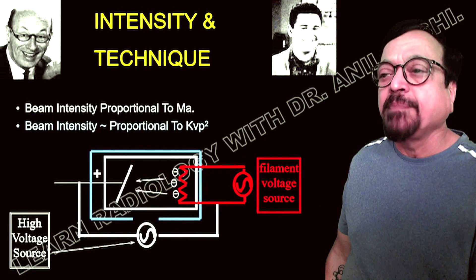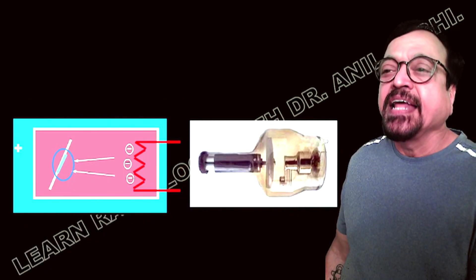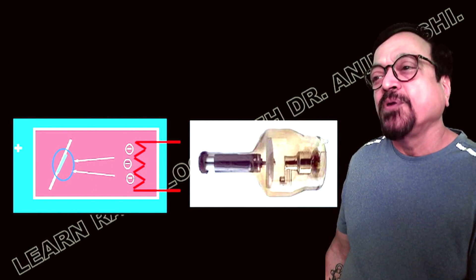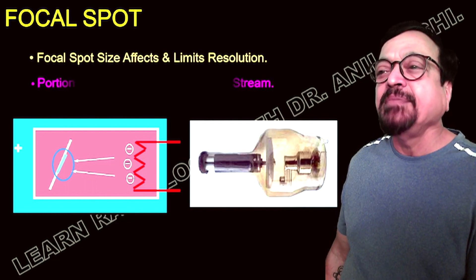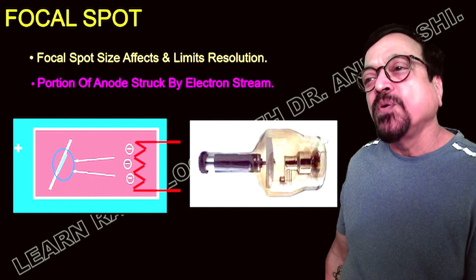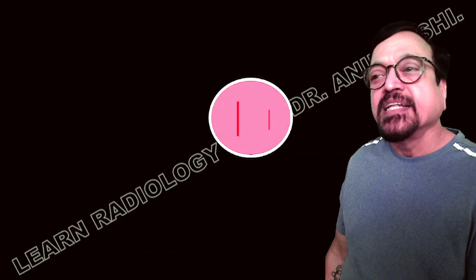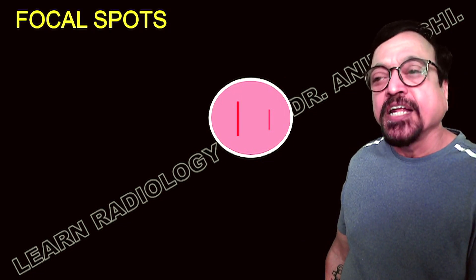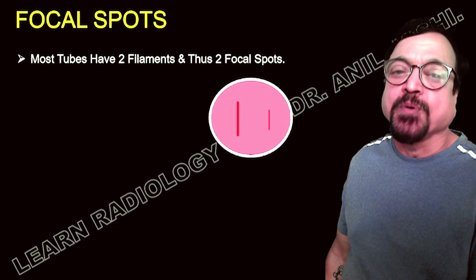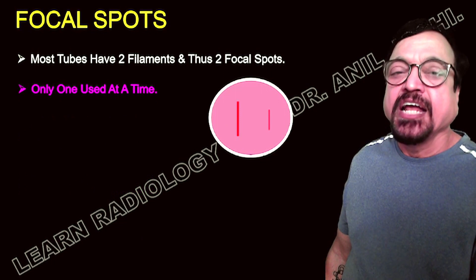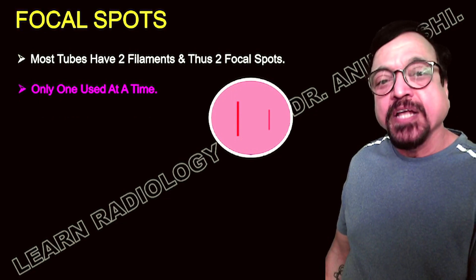Beam intensity depends on kV, mA, target material, and filtration. Beam intensity is proportional to mA, and proportional to kVp squared. High voltage is applied to the filament which releases electrons; they are then accelerated and x-rays are produced. The focal spot is the portion of the anode struck by the electron beam, and its size affects and limits resolution. Most tubes have two filaments and thus two focal spots — one small and one large.